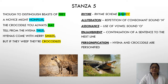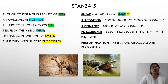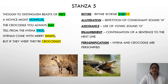In stanza five you have rhyme A-B-A-B-C-C, and alliteration — the repetition of the consonant sound N: 'novice' and 'nonplus' in line two. And then enjambment: continuation of a sentence to the next line, in the third and fourth line. Here also we have personification — the hyena and the crocodile are personified. The hyena is said to be smiling, and the crocodile weeping. So these two creatures are personified.